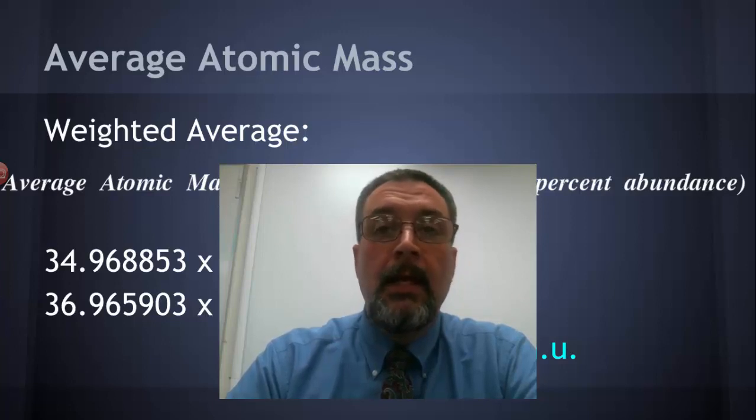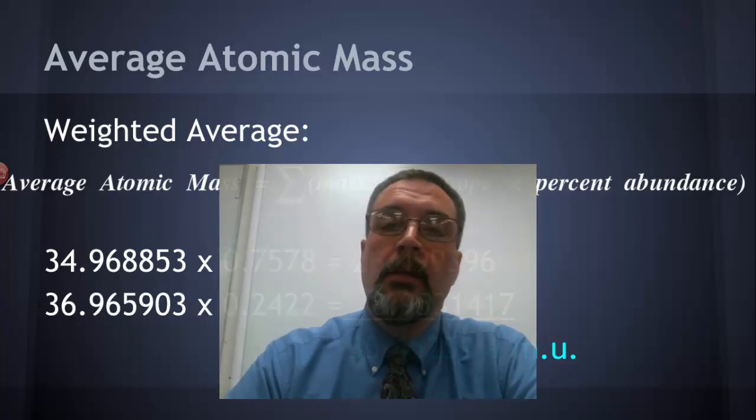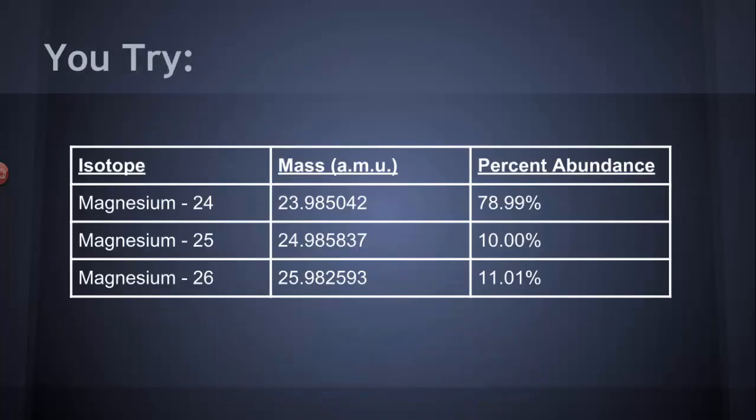That's how those masses on the periodic table are calculated. They are calculated taking into account all of the naturally occurring isotopes of each element and how abundant those elements are. All right? You try it.